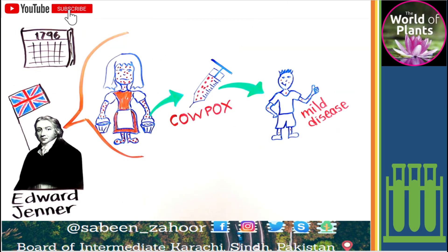In 1796, Edward Jenner, an English doctor, demonstrated that cowpox treatment could also prevent smallpox disease. This is because the two viruses are very similar to the human immune system.